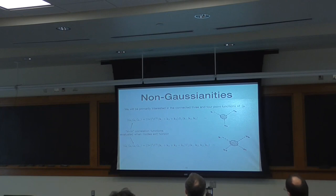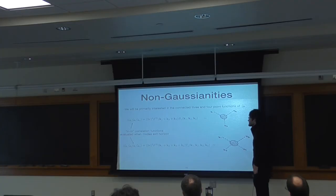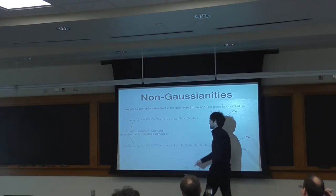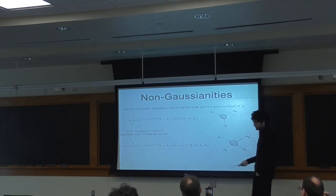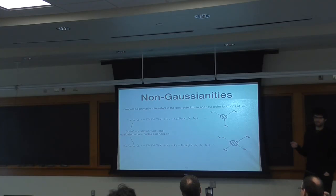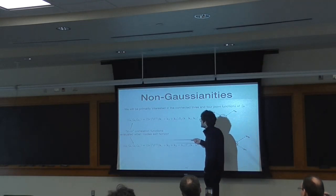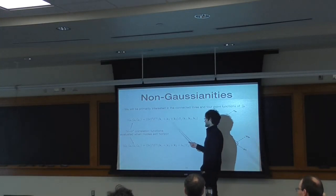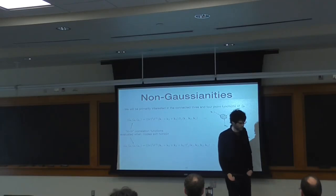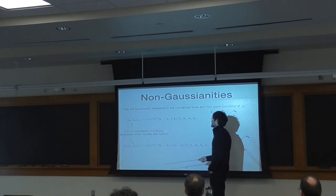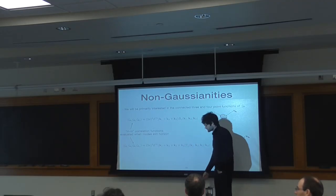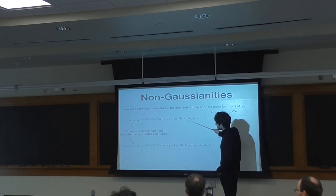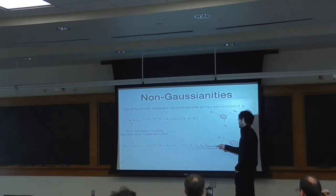I'll give a little primer on non-Gaussianities. We'll be primarily interested in the three- and four-point functions of the field zeta — specifically their expectation values evaluated right at the time that inflation ends. These expectation values are a little bit different than the standard scattering amplitudes we compute in field theory, which involve in and out states taken to minus and plus infinity. We'll be using the in-in formalism, evaluating these expectation values at a common time. Because inflation has spatial translational invariance, momenta will have to satisfy a momentum-conserving delta function. What's multiplying these delta functions will be the bispectrum for the three-point function and the trispectrum for the four-point function.